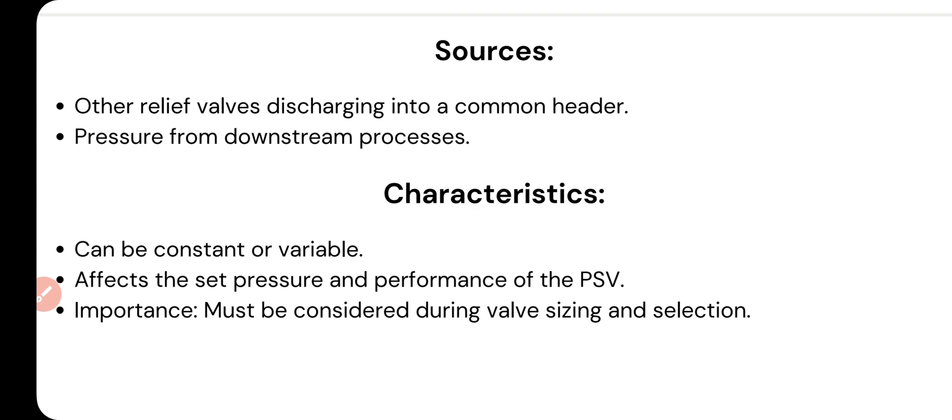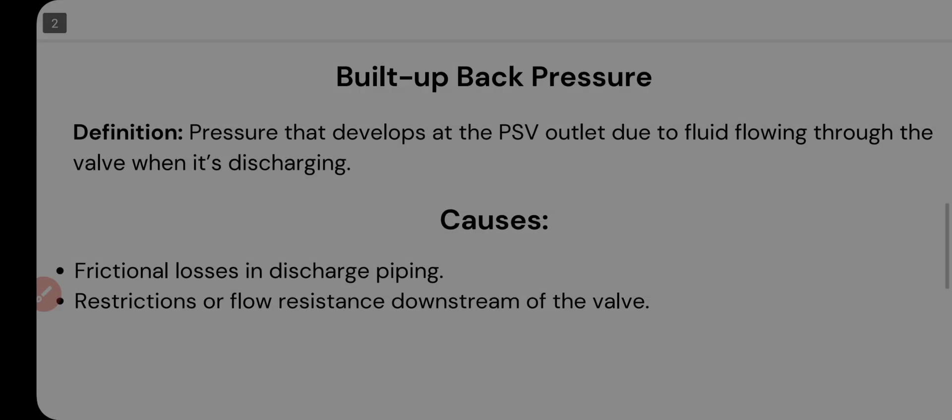The superimposed backpressure can be constant throughout the process or it can be variable. If not considered accurately, it can affect the set pressure and the performance of the PSV. It must be considered during valve sizing and selection. For conventional PSV types, one criteria is that the superimposed backpressure should be constant, so it must be accounted for when sizing and selecting the PSV.